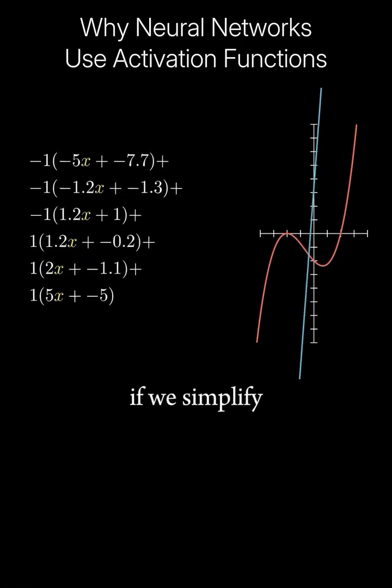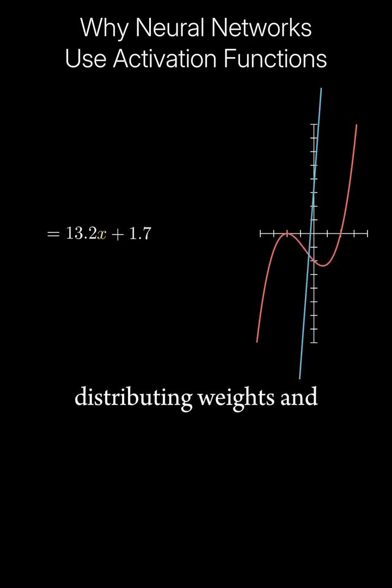Well, if we simplify our equation, distributing weights and combining like terms, we end up with a single linear function. Linear functions can only combine to make one linear function. This is a big problem, because we need to make something more complicated than just a line. We need something that is not linear, a non-linearity.